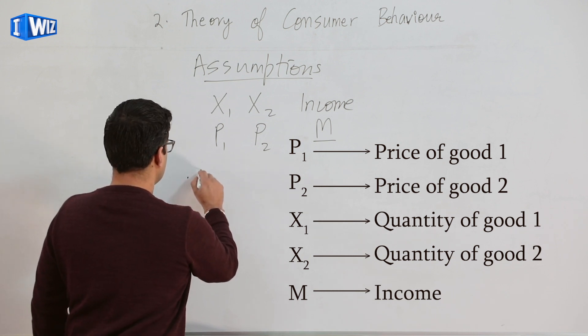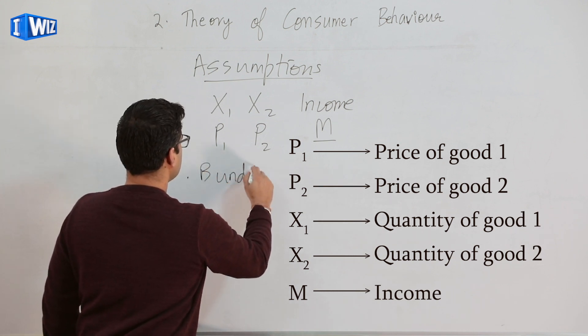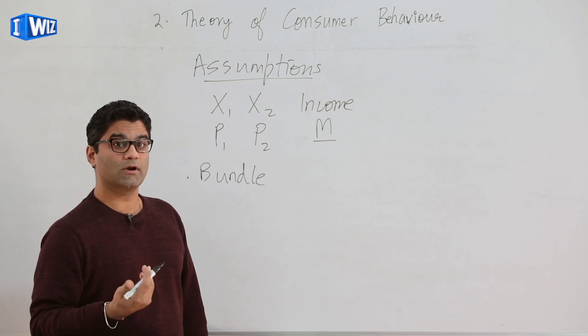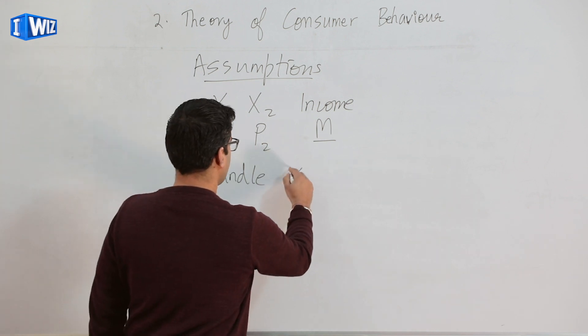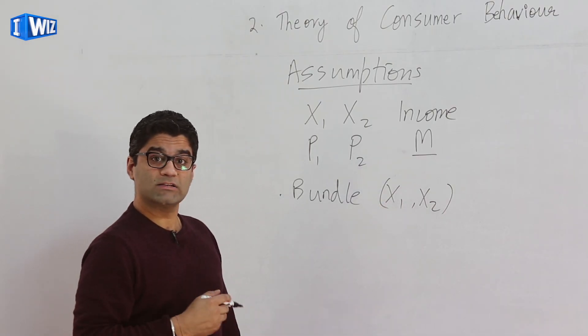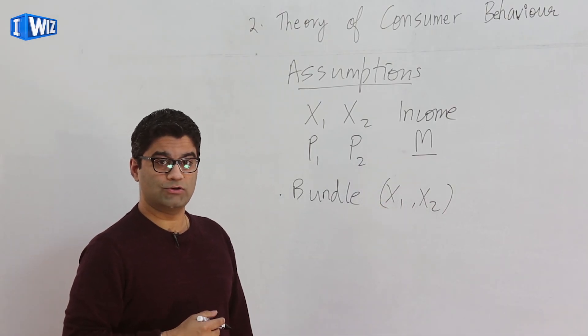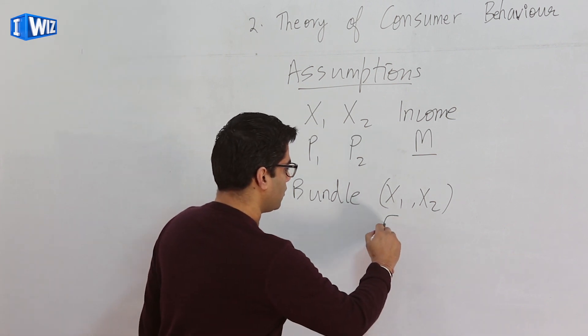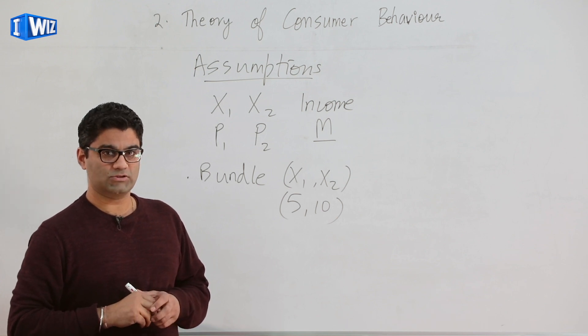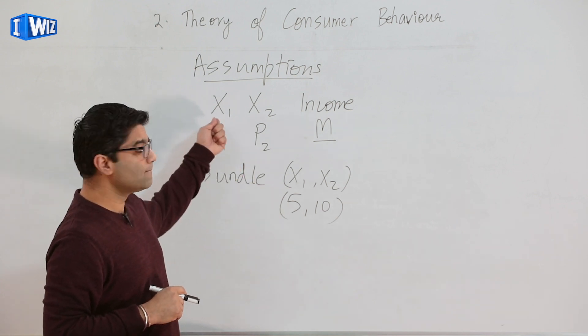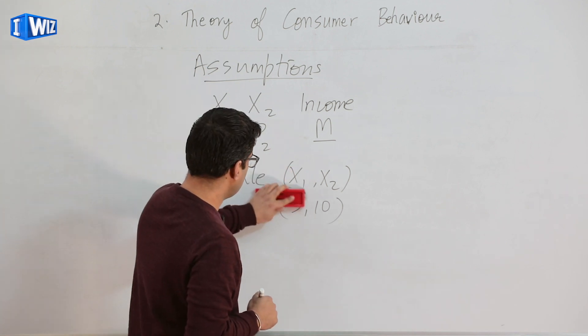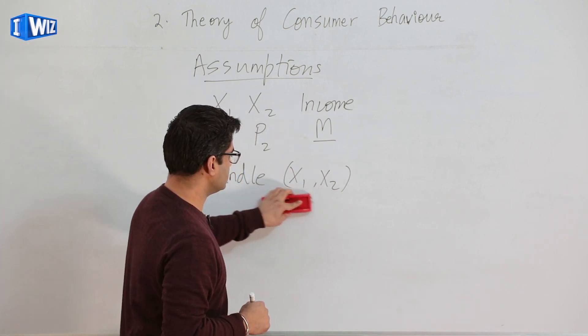A bundle corresponds to the combination of X₁ and X₂ that we would like to consume, and we write that as X₁ comma X₂. So for example, if I say the combination for a bundle that you are consuming is 5 comma 10, what does that mean? That's right, that means that you're going to be consuming five units of good one and ten units of good two. Just to give an example of what these terminologies mean.